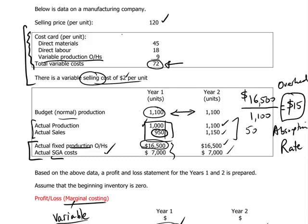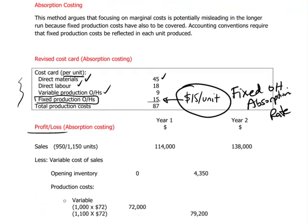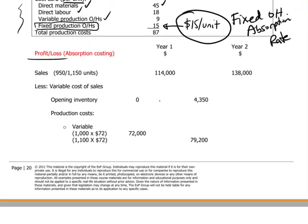Remember, if you get confused between the two systems, the number of units is exactly the same in both because it's the same reality we are addressing. The company produces 1,000 units and sells 950 in year one. In year two, the company produces 1,100 units and sales are 1,150 units. Let's look at how this is recorded according to absorption costing.